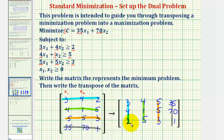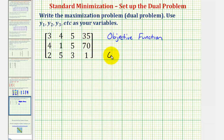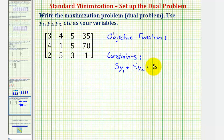And now we'll use this transposed matrix to write the dual problem. The last row will always give us the objective function, and the remaining rows will give us our constraints. Notice how we are told to use the variables y sub one, y sub two, y sub three, and so on. So this first row represents our first constraint. The first constraint would be three times y sub one, plus four times y sub two, plus five times y sub three.